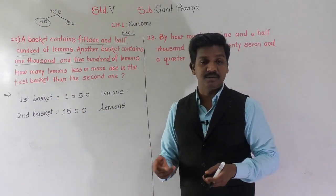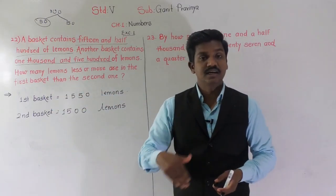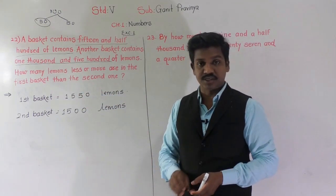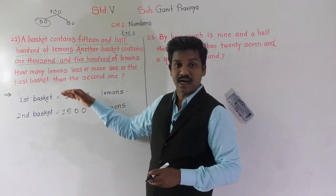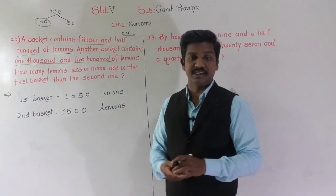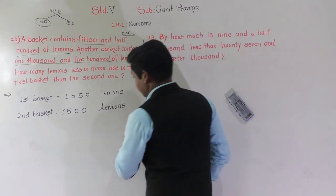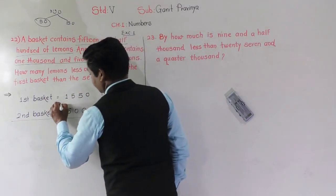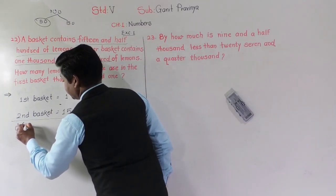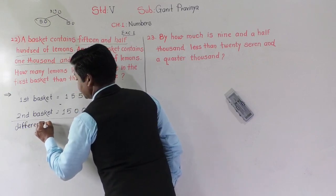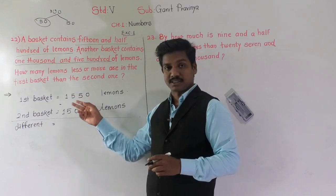So in which basket are lemons more? Yes, the first basket. In the first basket lemons are more than the second basket. Now we have to find how many lemons are more in the first basket than the second basket. To find that, we need to subtract. We need to find the difference between these two numbers, and that will tell us how many lemons are more in the first basket.